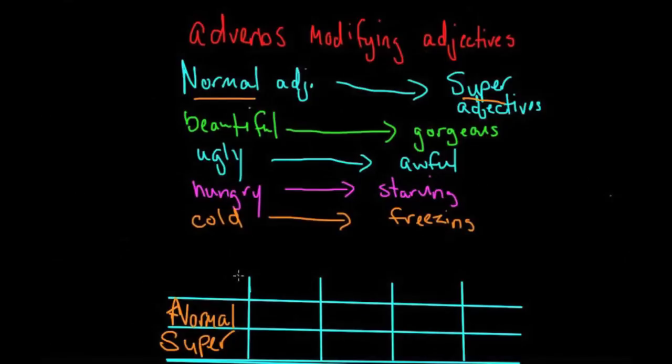So the first one we're going to take a look at is very. Very does modify our normal adjectives, but it does not modify our super adjectives. So for example, we say very beautiful, but we do not say very gorgeous.